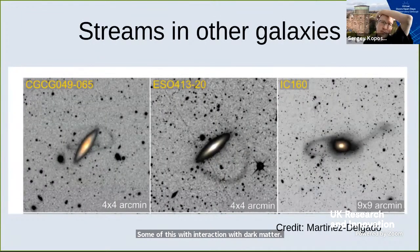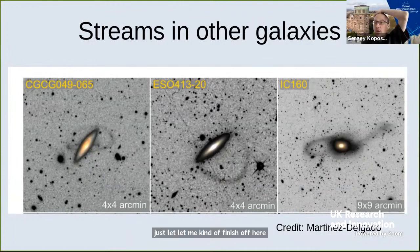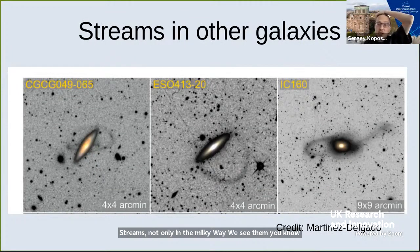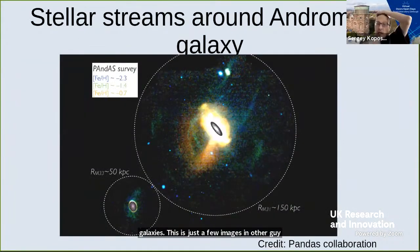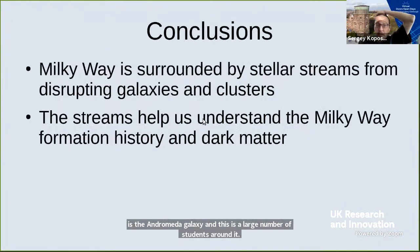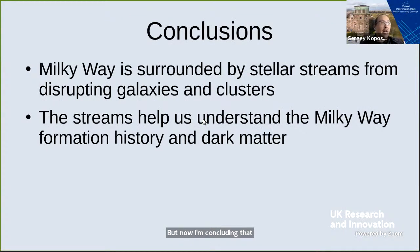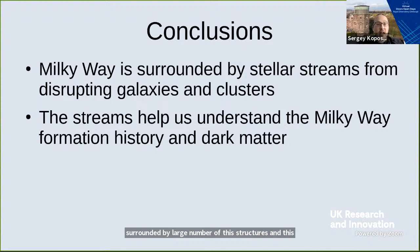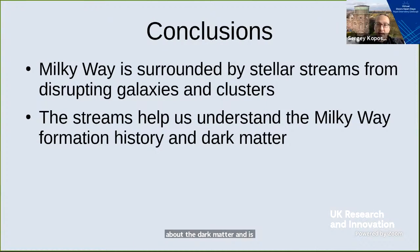We observe streams not only in the Milky Way — we see them in other galaxies. We also see streams around the Andromeda Galaxy, with a large number of streams around it. To conclude: hopefully I've convinced you that stellar streams are quite interesting. The Milky Way is surrounded by a large number of these structures, and these streams can really help us understand both how the Milky Way formed and also understand more about dark matter and its distribution. Thank you.